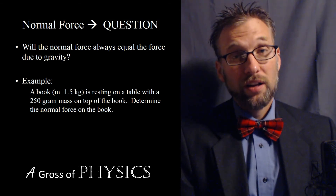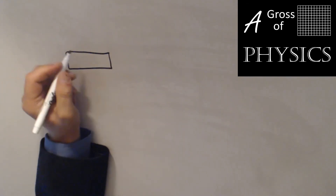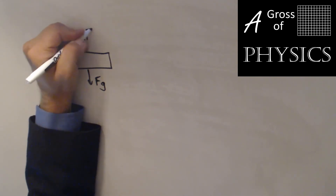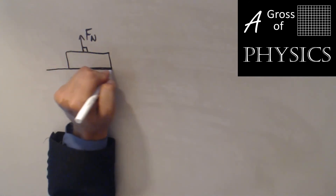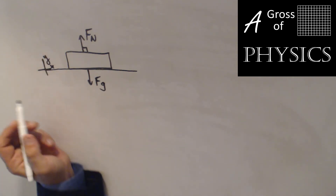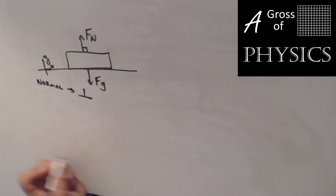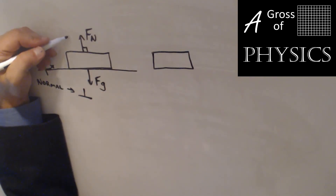So once again, this was the normal force discussion. Whenever we have an object resting on another object, we have the force of gravity down and the upward force from the surface opposing motion — we call that the normal force because it's perpendicular to the surface. If the surface is flat along the ground, this vertical force is perpendicular to the x-axis. Normal in math means perpendicular.